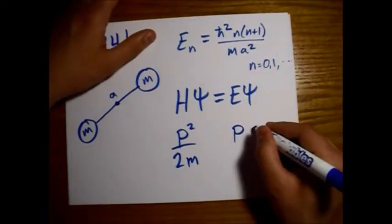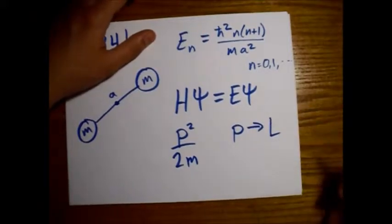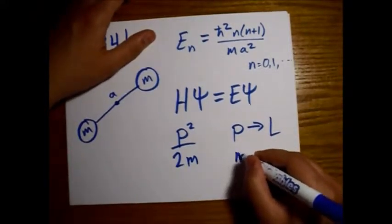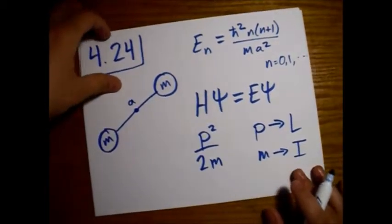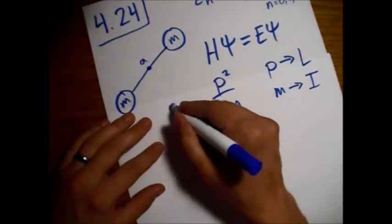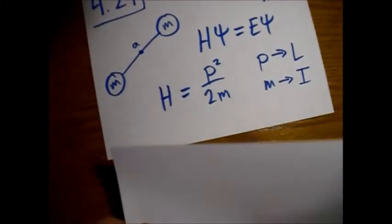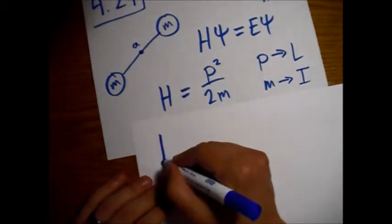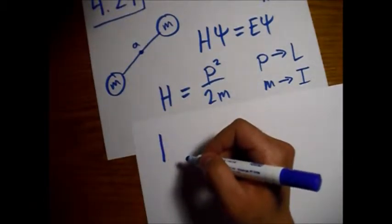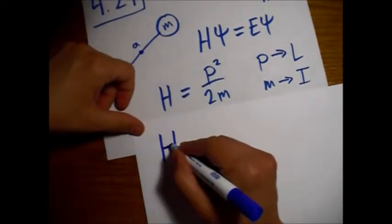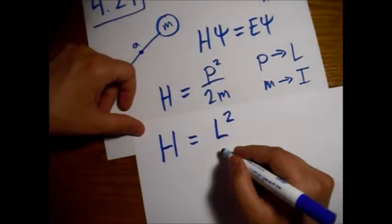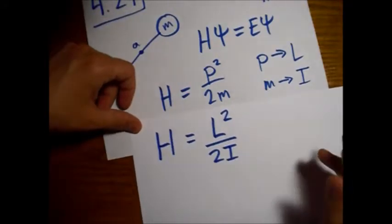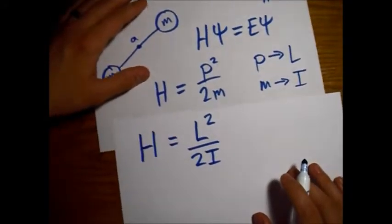Instead of momentum, we have angular momentum. And instead of a mass, we have the moment of inertia. So rather than our Hamiltonian looking like this, we're going to write it just like Griffiths suggests, express it in terms of the total angular momentum. So p goes to L, and then we have 2 times the moment of inertia on the bottom.